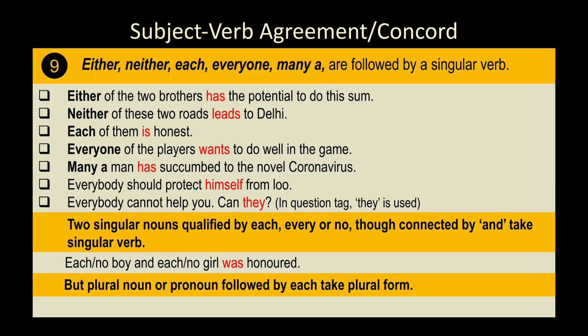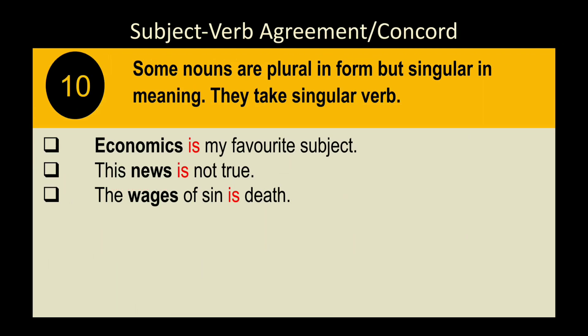However, if a plural noun or pronoun is followed by 'each,' it takes plural form. Example: 'We each have a pen' — because 'we' is a plural pronoun, and 'each' follows it, so we use the plural form 'have.'